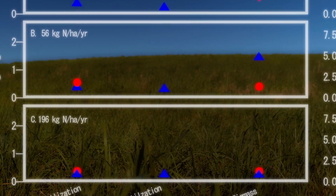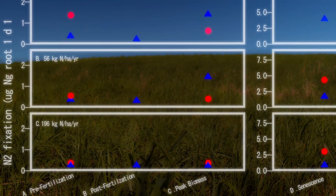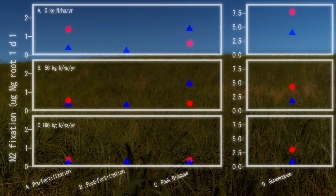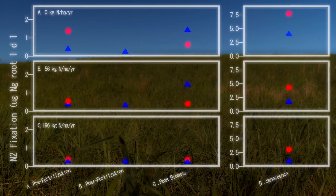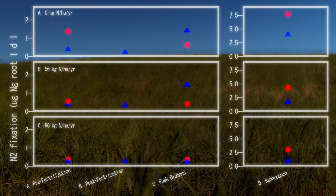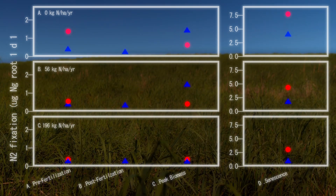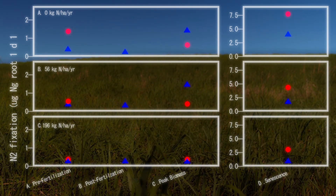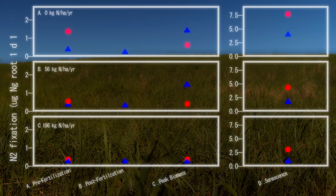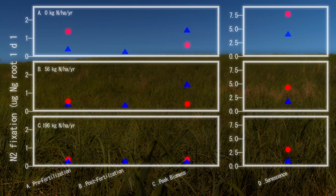When I was reading this paper, I came across a graph I found really fascinating. Across the bottom axis — the x-axis — we have different seasons of the plant's life. This was actually a study about fertilization. We have a pre-fertilization timeframe, post-fertilization right after fertilizing, peak biomass when it's making the most growth, and then senescence — after the plant is dead and brown for the winter.